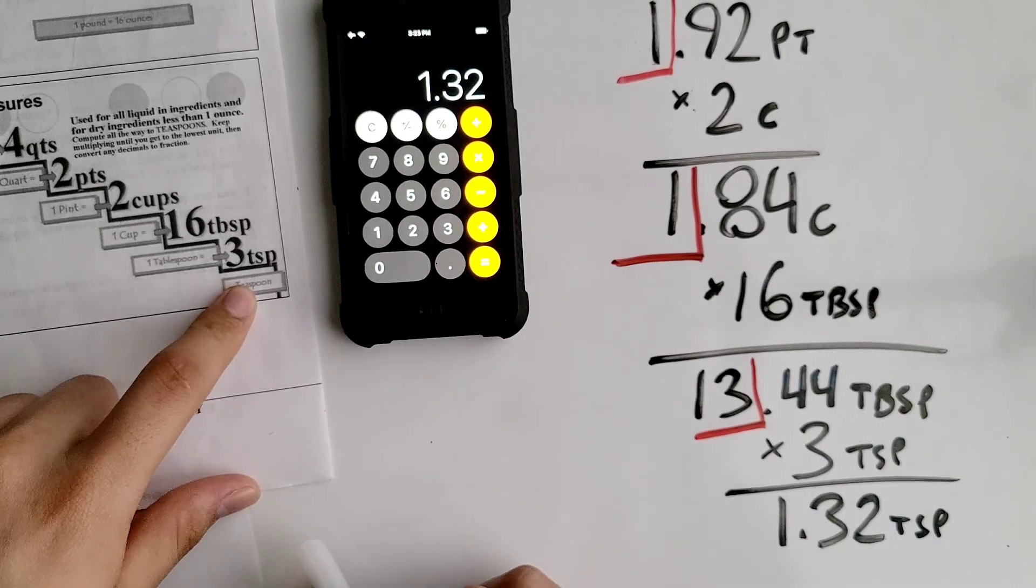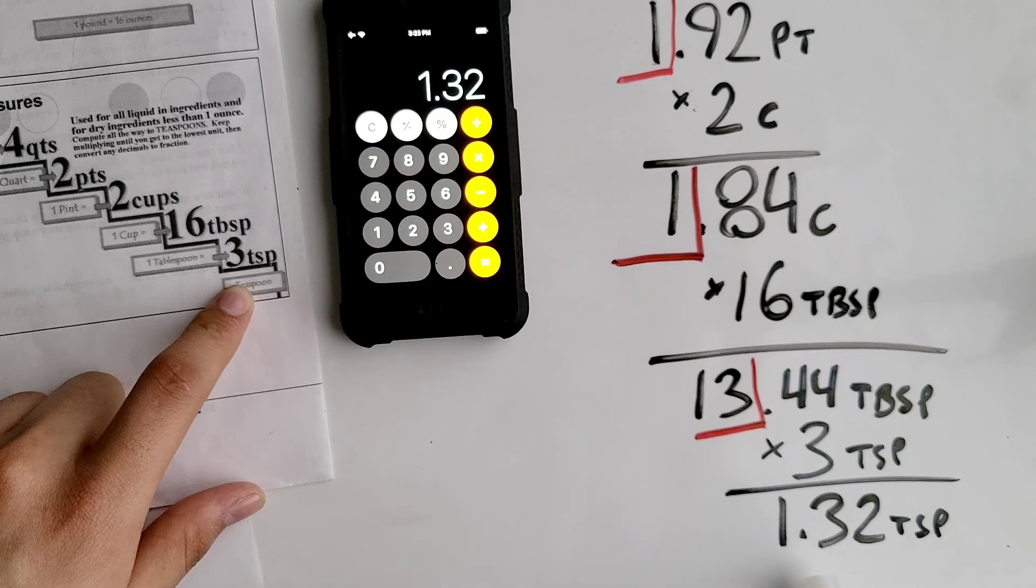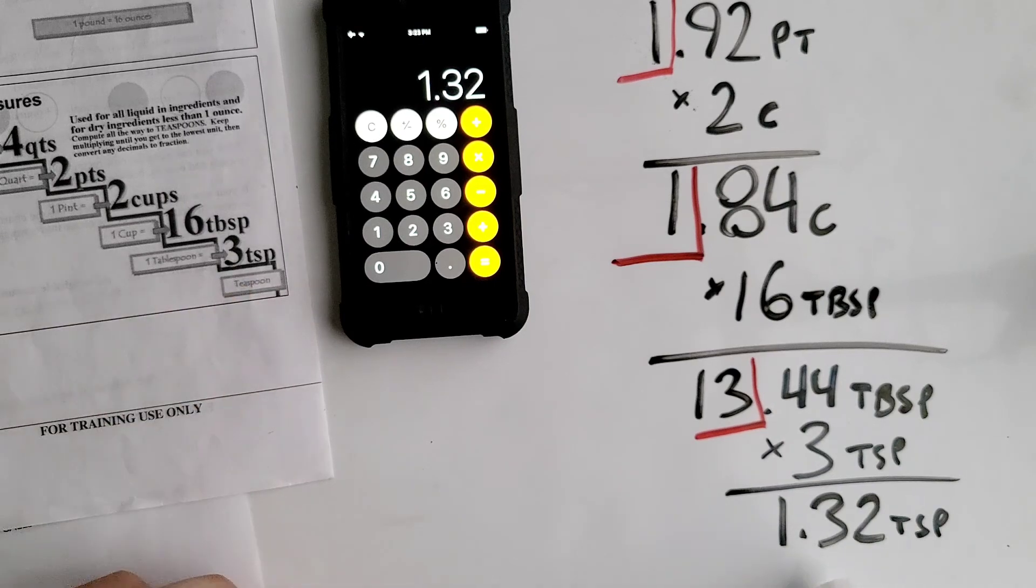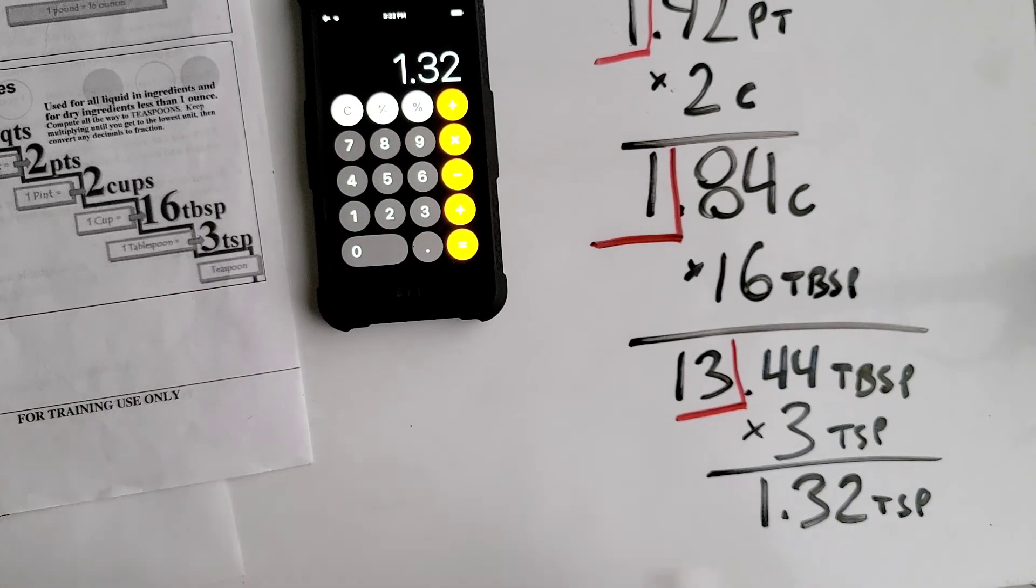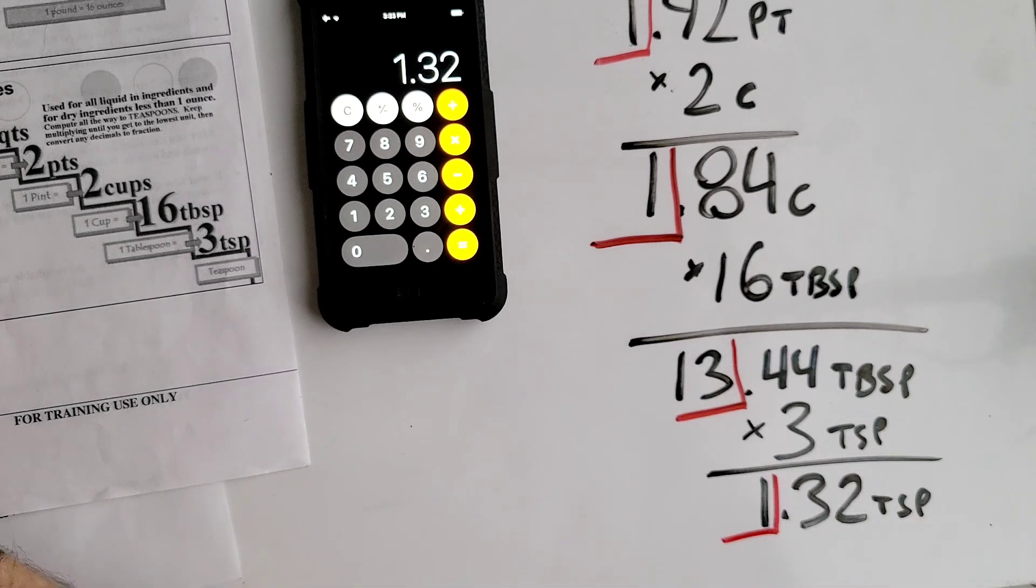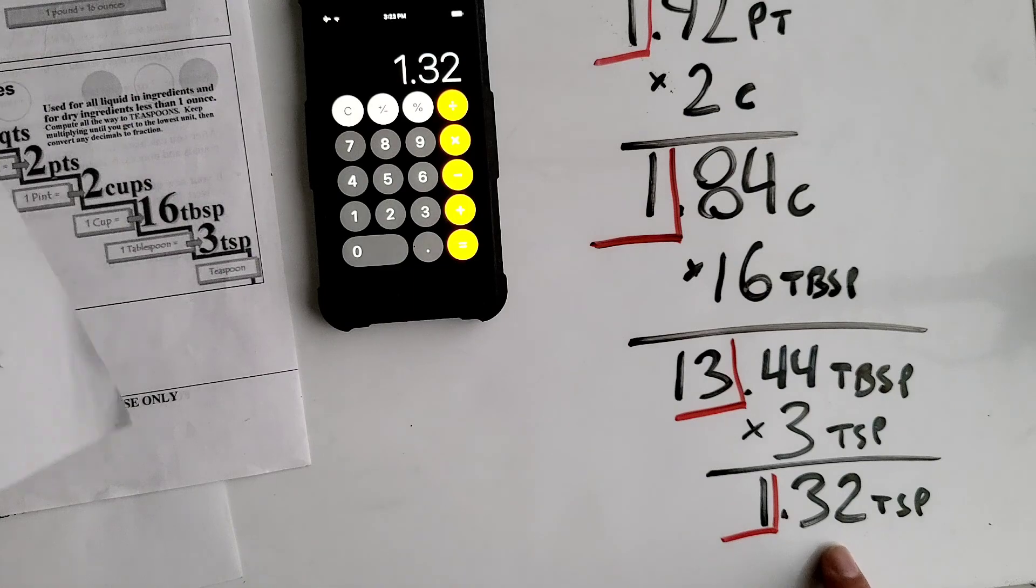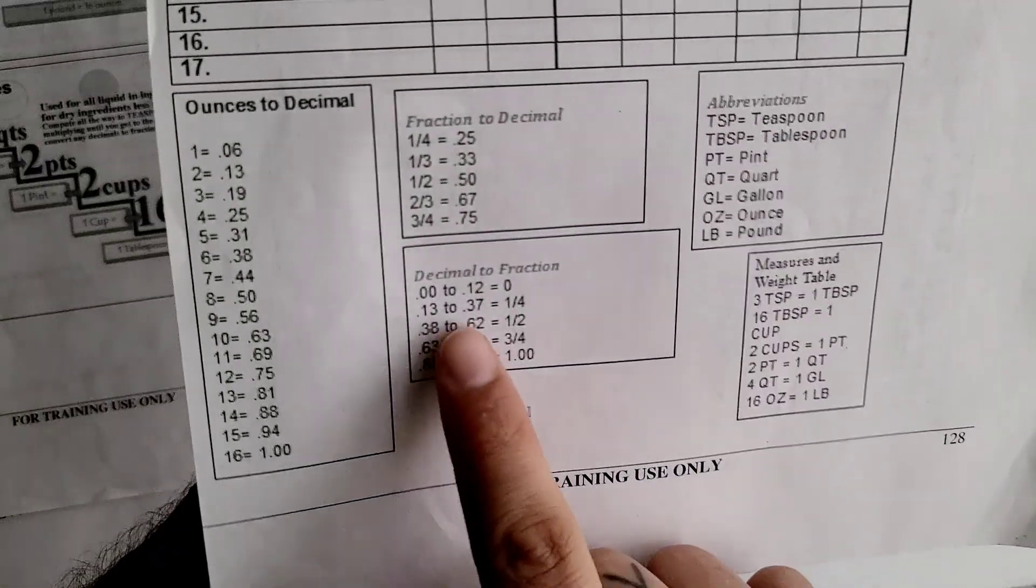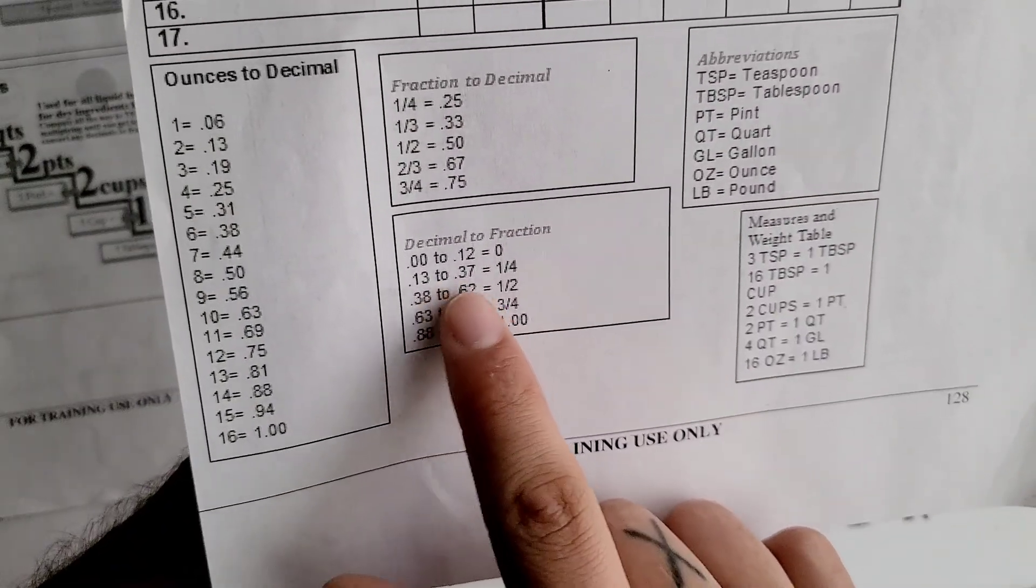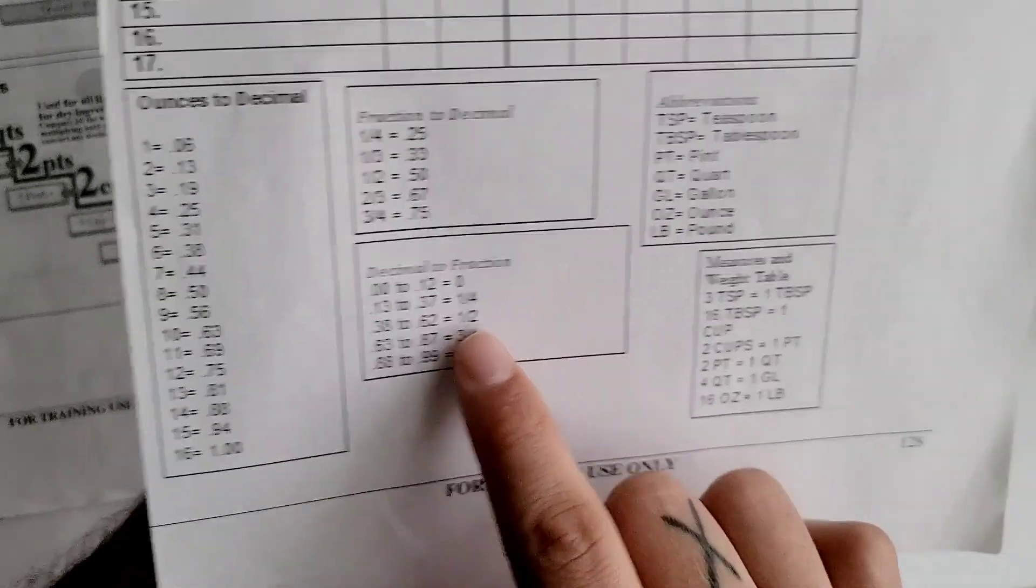Now that we're at its lowest unit, we can't go any more down than that. That's when we have to go to our decimal to fraction chart. Block off your whole number. We go to our decimal to fraction chart to determine where this decimal falls in between. 0.32 falls here, so it ends up being one-fourth.